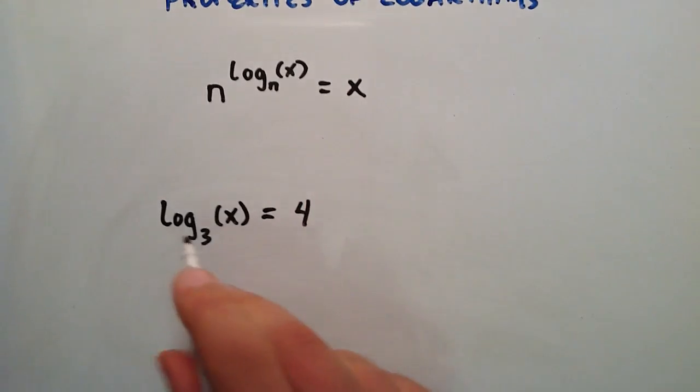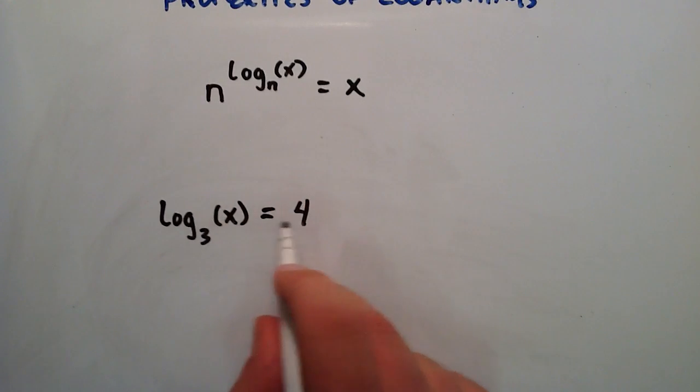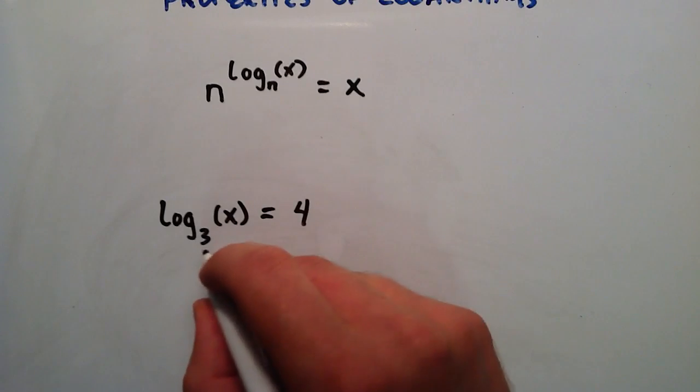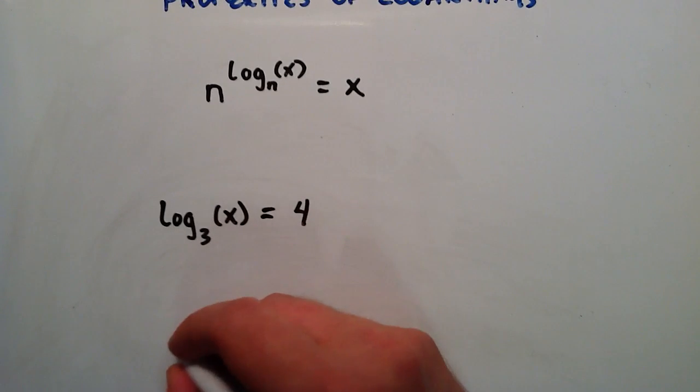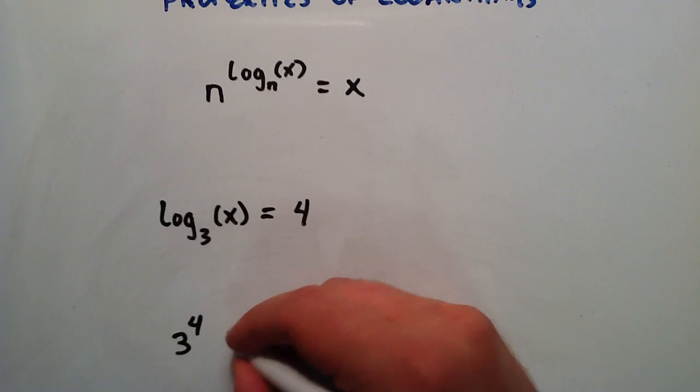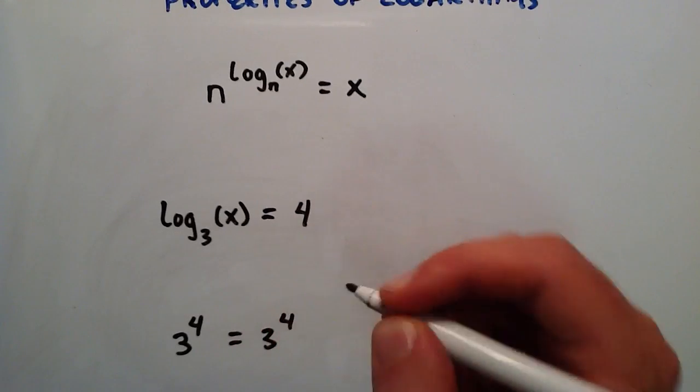So this expression is implying that this whole side equals 4. So we could really do 3 raised to the fourth power equals 3 raised to the fourth power.